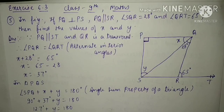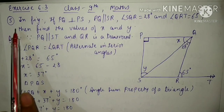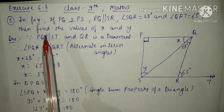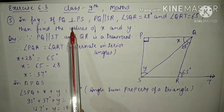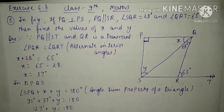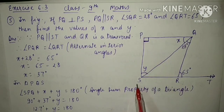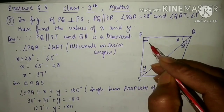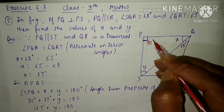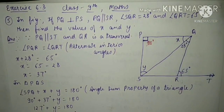Today we will start the fifth question. In figure, PQ is perpendicular to PS — that means this angle is equal to 90 degrees.